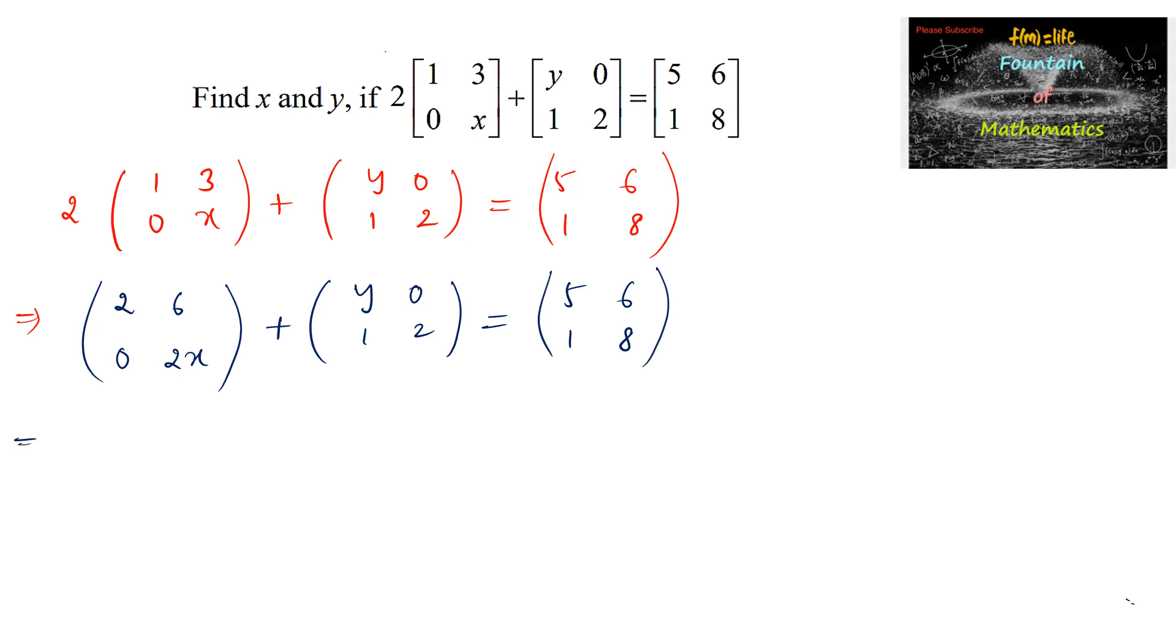So, adding the two matrices on the left side, corresponding elements to be added. So, 2 plus y, similarly 6 plus 0, and 0 plus 1, and 2x plus 2 is equal to 5, 6, 1, and 8.